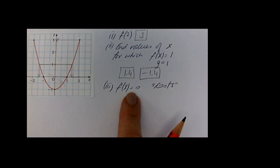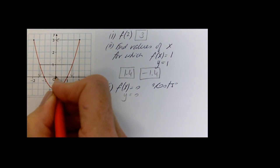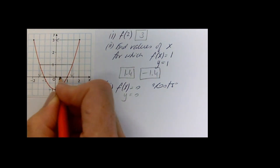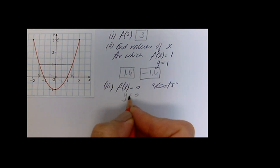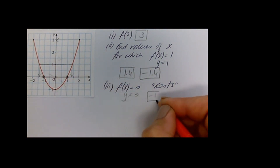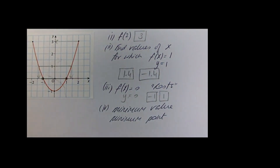If x is equal to 0 — the roots of the graph — the roots are of course where y is equal to 0. Y equals 0 is the x axis, and we're looking at where the graph cuts the x axis. It's cutting it at minus 1 and 1. The minimum value is the lowest value on the curve, right down here at the lowest point.